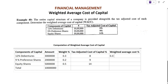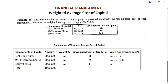Multiply the weight column by the tax adjusted cost column: 0.3 × 8 = 2.4, then 0.2 × 9 = 1.8, then 0.5 × 14 = 7. Now add all these: 2.4 + 1.8 + 7 = 11.2%. So the weighted average cost of capital is 11.2%.